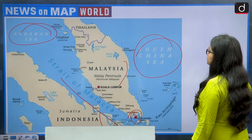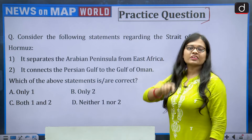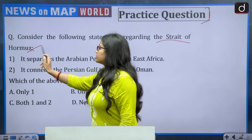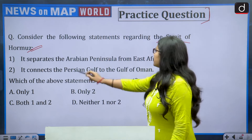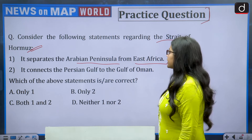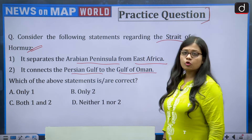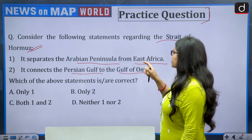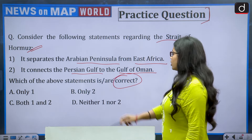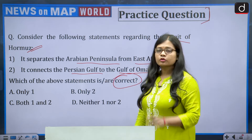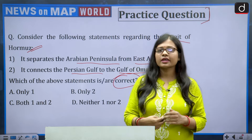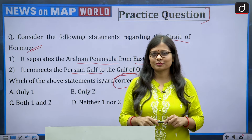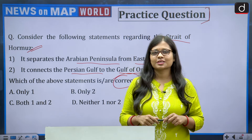Now for the practice question: consider the following statements regarding the Strait of Hormuz. Statement one: it separates the Arabian Peninsula from East Africa. Statement two: it connects the Persian Gulf to the Gulf of Oman. Which of the above statements is or are correct — only one, only two, both one and two, or neither? Give the answer in the comment section. As always, open your atlas, see the location of the Strait of Hormuz, and give your answer. That's all for today — thank you for watching. Keep reading, keep writing, and keep subscribing to the channel.